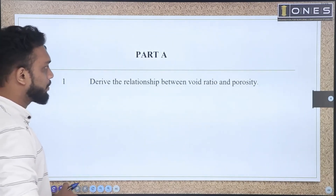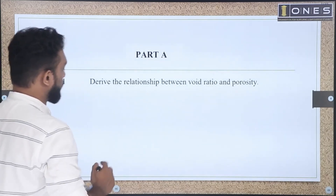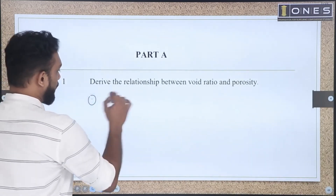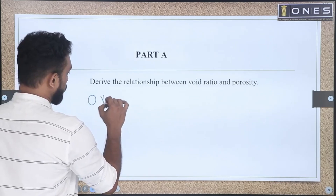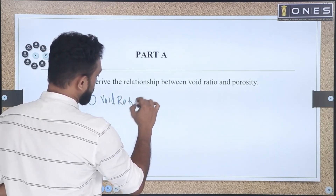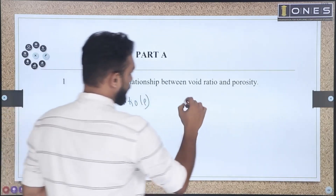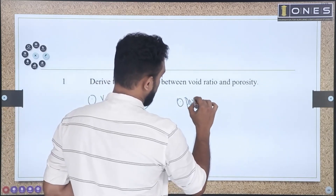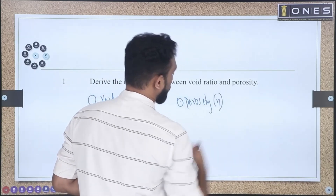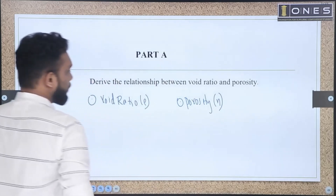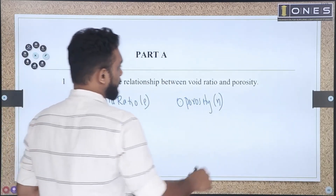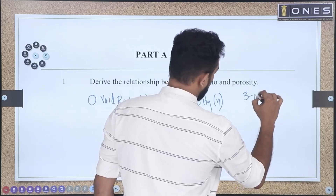Derive the relationship between void ratio and porosity. Here we have the answer. Let's define void ratio and its notation. We use the notation n. We have a three-phase diagram in soil.